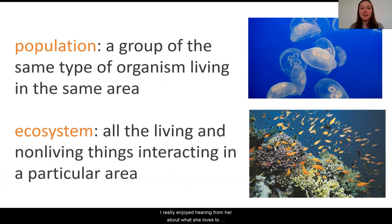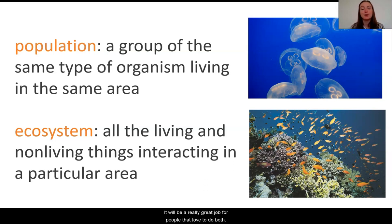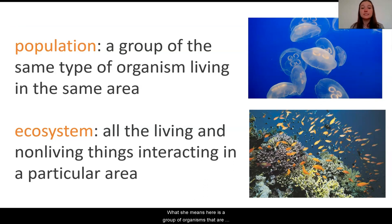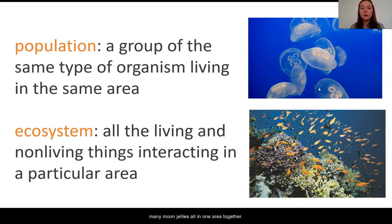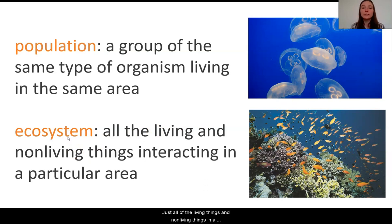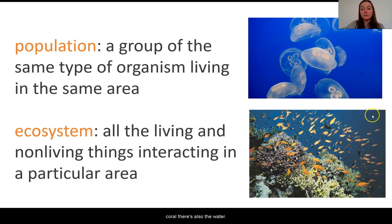I really enjoyed hearing from her about what she loves to study in the moon jelly population. It seems really cool that she gets to work outside but also study science in the lab. As she was giving us information about what she studies, I heard her use the word population. What she means here is a group of organisms that are the same type living in the same area. She also mentioned something called an ecosystem — all of the living things and non-living things in a particular area. Looking at this image, we can see many different types of fish, plants, coral, and also the water — all of these things interact with one another and have an effect on each other.